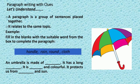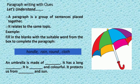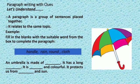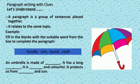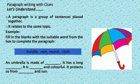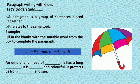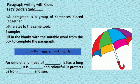You can see the picture of an umbrella. When we write a paragraph about an umbrella, all the sentences we write will give all the information about an umbrella. Can you see that dark blue box? There are words given there for your help to complete the paragraph. Let us read the words: handle, rain, round, cloth.